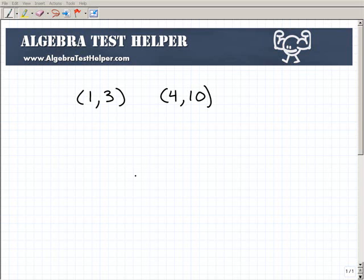Another math video from AlgebraTestHelper.com. What we want to do here is find the slope given these two points, these two coordinates. I'm going to give you a couple names for a point. These are points on a line, so you'll hear them referred to as points. You'll also hear them referred to as coordinates or ordered pairs.